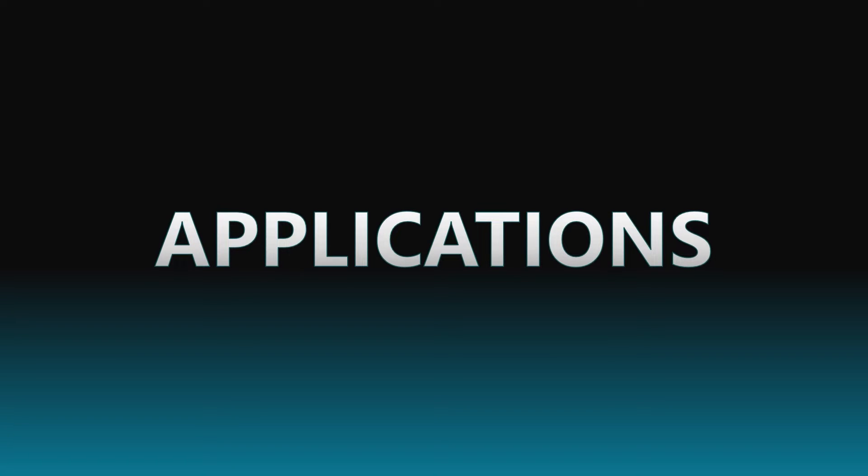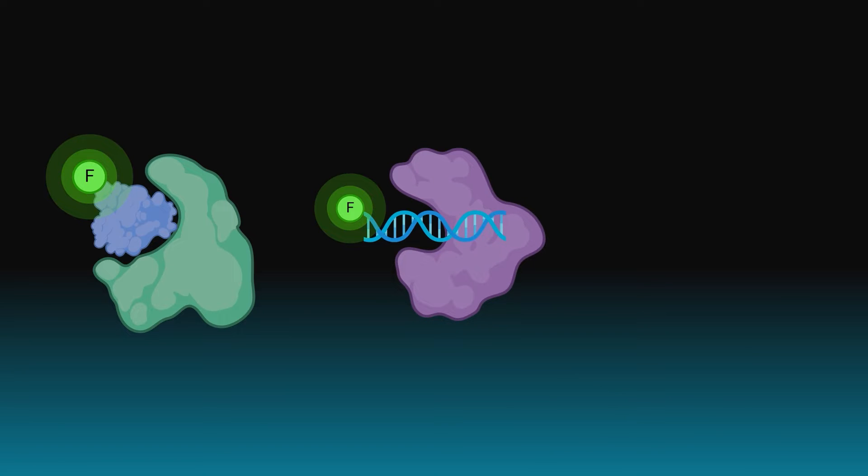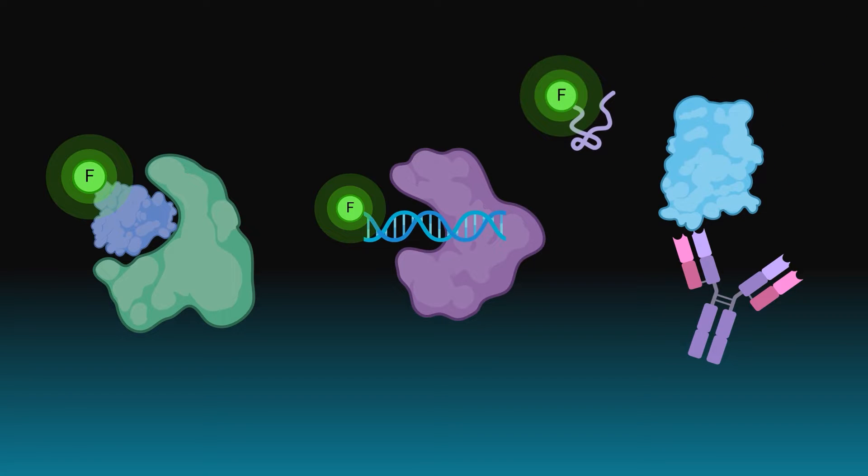Now, let's explore how fluorescence polarization can be applied in biochemical assays. One of the most common applications is in studying protein-protein interactions, but they can be used to measure nucleic acid-protein interactions, enzyme-substrate interactions, or competition studies in which a tracer is displaced, in addition to many other applications, basically any case in which the size of the fluorescent entity can be measurably influenced by a binding partner.